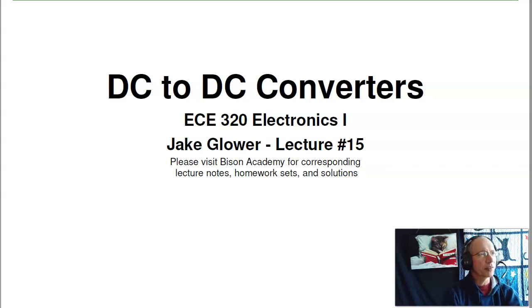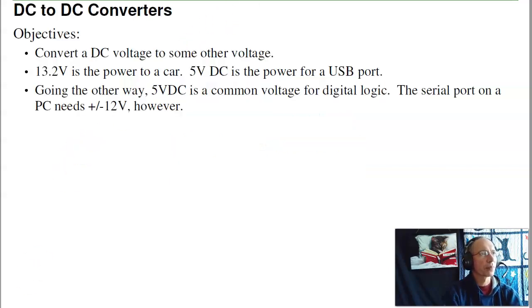Welcome to lecture number 15 for ECE 320, Electronics 1, DC to DC Converters. Now converting AC voltages is really easy. You just use a transformer. DC is a lot harder. You can do it, but it tends to be much more difficult and lose efficiency.